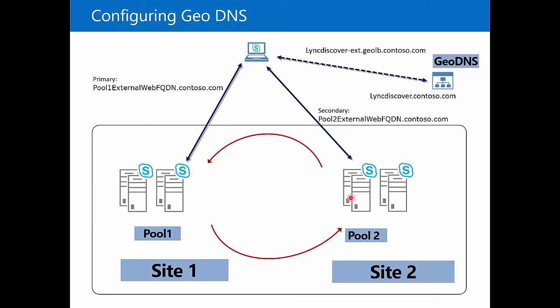The advantage of this scenario is, number one, we get more regionalized traffic, which is good if, for example, Pool 1 happens to be on the west coast of the United States and Pool 2 happens to be on the east coast. But this also provides us an additional layer of protection when we have a disaster.